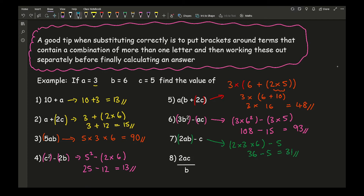Finally, moving on to question 8. I've got 2ac, so this is going to be 2 times 3 times 5, and that is all being divided by 3 — which is b, which is 6. Working these out: 2 times 3 is 6, times 5 is 30, over 6. I've not written the division symbol because I don't want to get confused — it's easier to keep things as a fraction. Then 30 divided by 6 gives the final answer of 5.